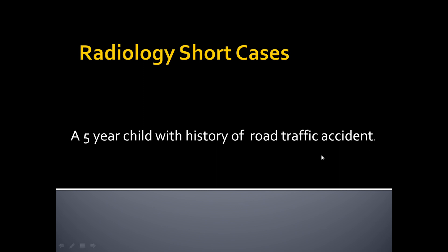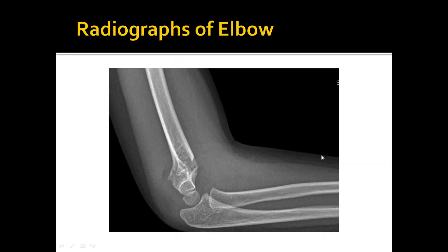Radiographs of the elbow were performed. This is the first lateral radiograph of the elbow. We can see there is a lucency and slight displacement of the fracture line. There is a supracondylar fracture in the distal humerus, which is the weakest point in the humerus and is commonly seen in the pediatric population.